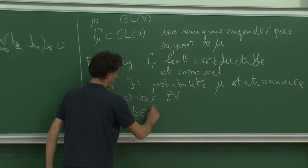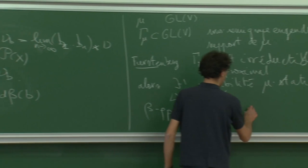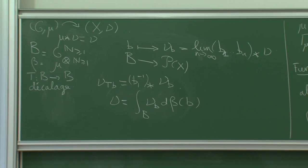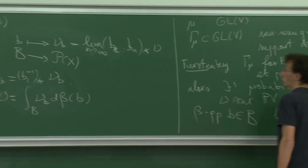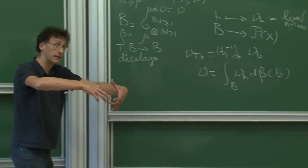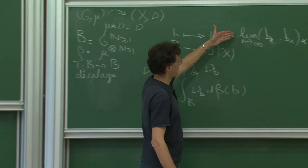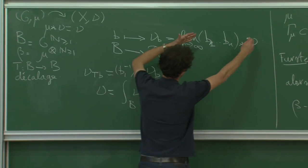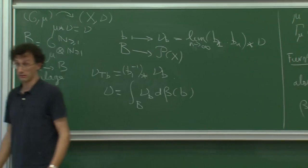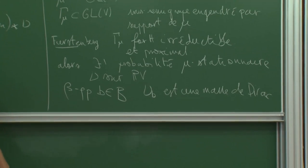La présence dans le semi-groupe de transformations proximales — des transformations qui ont tendance à contracter l'espace projectif sur un seul point — fait que quand on fait des tirages aléatoires et qu'on les applique à une mesure nu, ça a tendance à la concentrer sur une masse de Dirac. C'est pas très surprenant mais c'est pas si facile à démontrer.